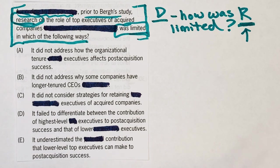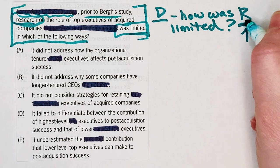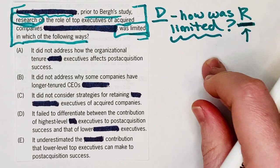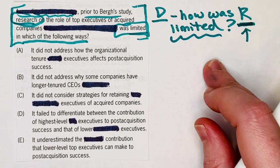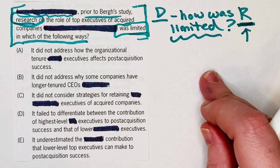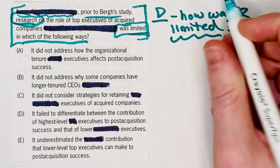Furthermore, existing research suggests that retaining the highest level top executives is related more positively to post-acquisition success than retaining lower-rank top executives. Okay, so that was the research — but that sentence doesn't tell us why it was limited. We have to go to the next sentence, which says: however, this explanation, while insightful, suffers from two limitations.